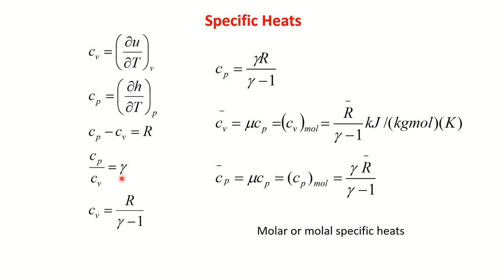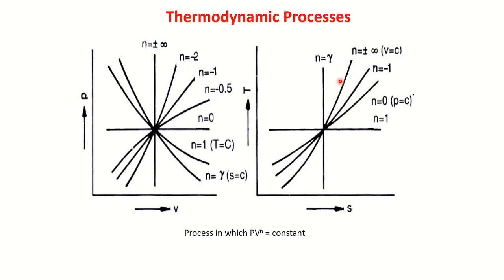We know Cₚ/Cᵥ = γ. From this, Cᵥ = R/(γ−1) and Cₚ = γR/(γ−1). Once we know Cᵥ, we can find Cₚ. Molar specific heat C̄ᵥ equals μCᵥ, and when using molar quantities you need R̄, the universal gas constant. When this symbol is used it indicates a molar quantity.